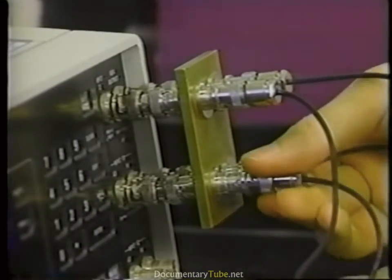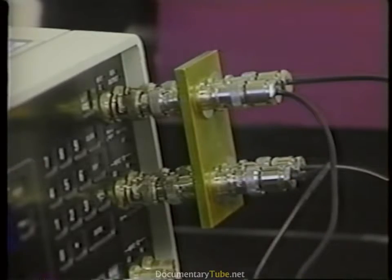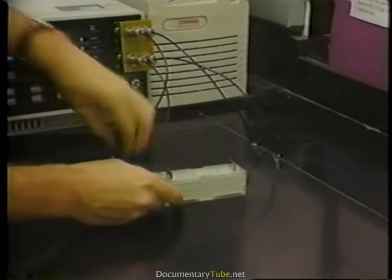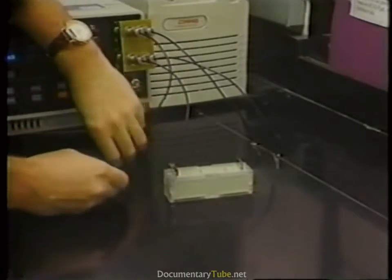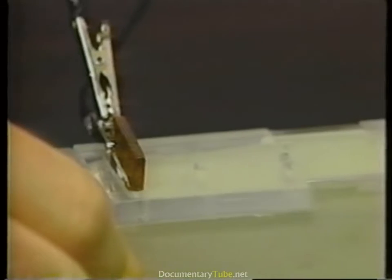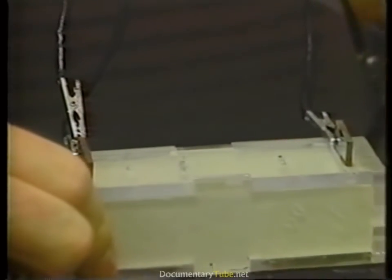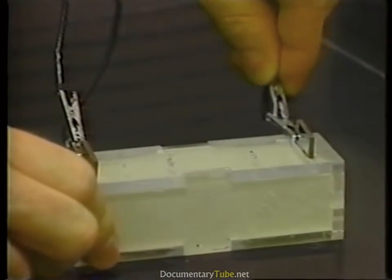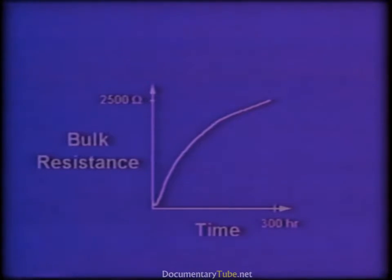The electrical properties of cement or mortar samples can be followed over time, leading to profiles of changes in electrical resistance. The electrical properties of this cement specimen are being measured using two metal electrodes and equipment that measures resistance and impedance. This chart illustrates how the resistance of electricity through the cement increases as the cement hydrates.